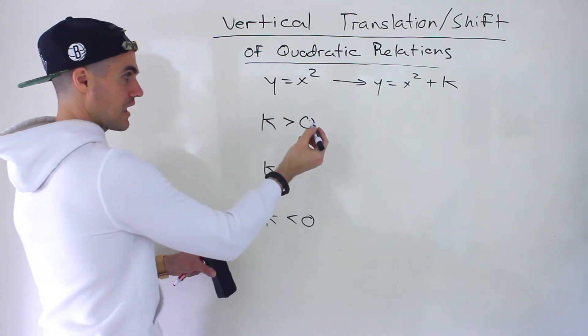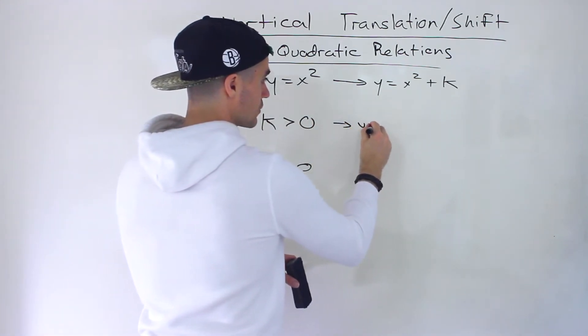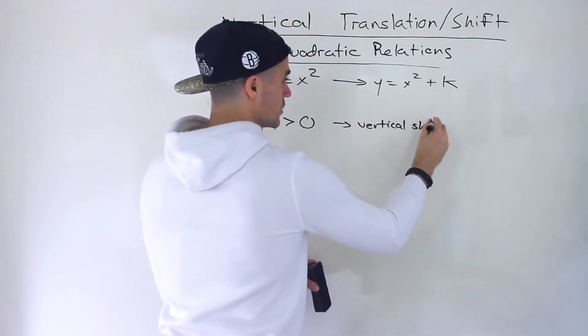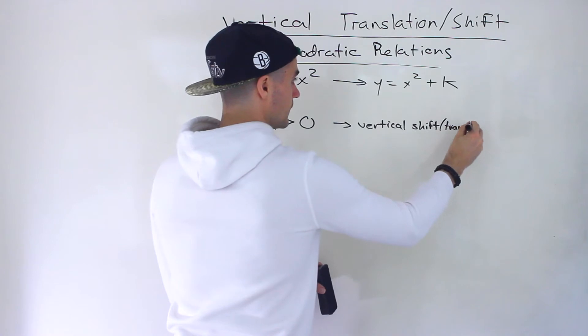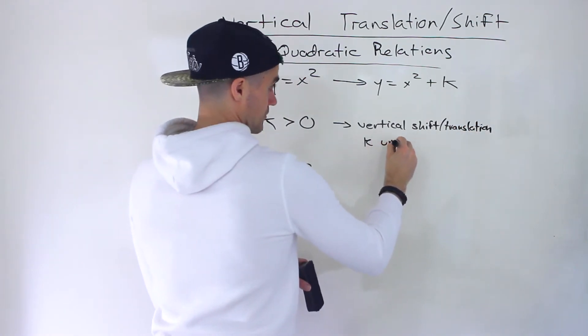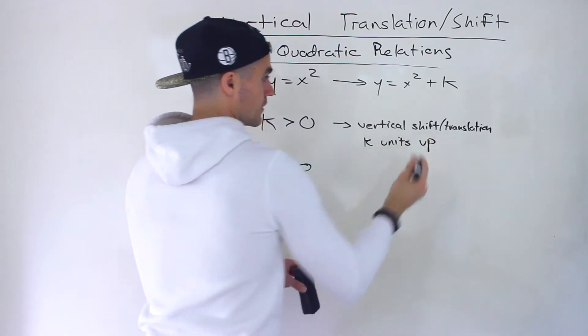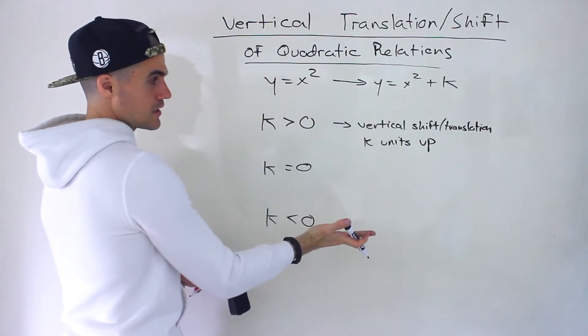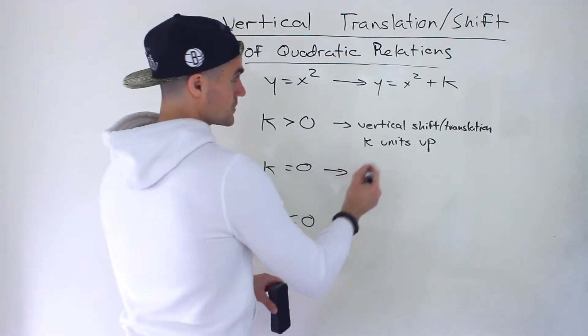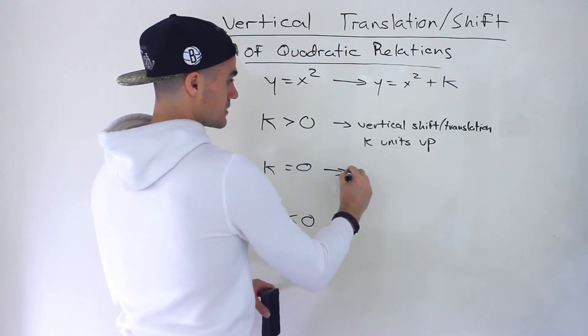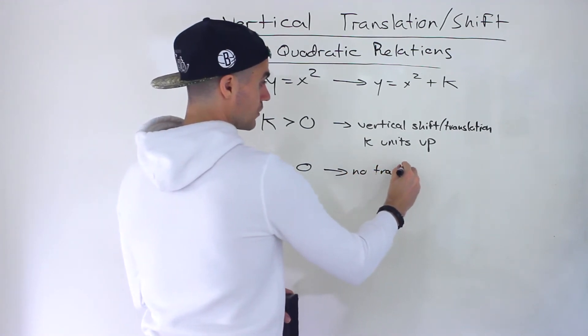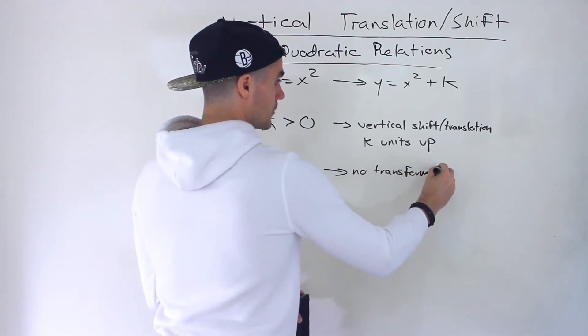If we have a positive k value, that means there's a vertical shift or translation k units up. We're taking the quadratic and shifting it up by k units. If k equals zero, then we just have x², so there's no transformation, no vertical shift up or down.